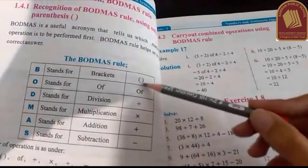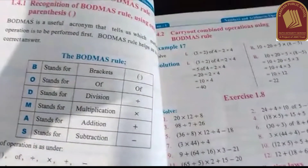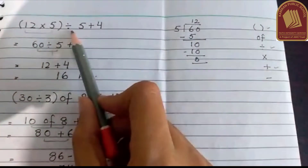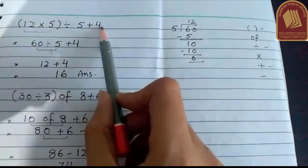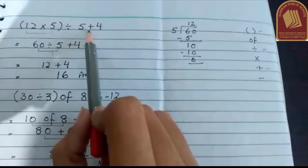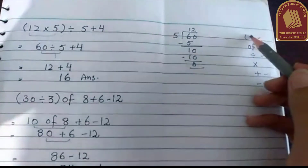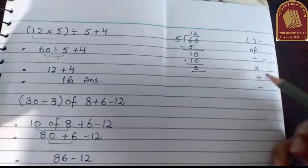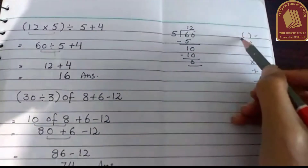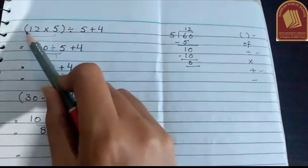You have to solve using these rules. I have an example here: 12 into 5 divided by 5 plus 4. You have to solve this using the BODMAS rule — first Brackets, then Of, then Division, then Multiplication, then Addition, and finally Subtraction. First I have to solve the bracket.